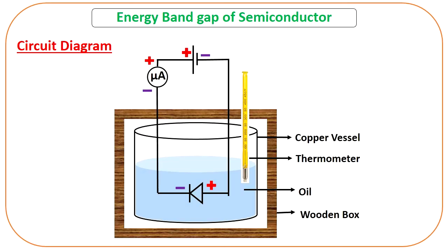Now connect the circuit diagram. Here you can see the circuit diagram: the battery positive and negative terminals, and the micro ammeter connected in series with the battery. The PN junction diode is connected in reverse bias — the positive terminal of the battery via the micro ammeter is connected to the negative of the diode, and the negative of the battery is connected to the positive of the diode.